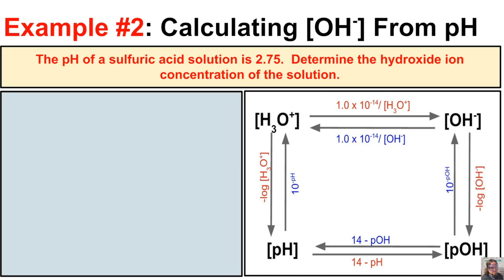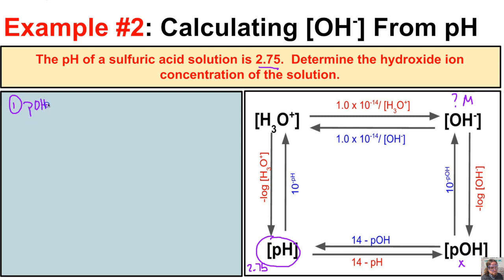In this second example, the pH of a sulfuric acid solution is 2.75, and we need to determine the hydroxide ion concentration. We know the pH is 2.75, and we want to find the hydroxide ion concentration. So in the first step, we figure out the pOH by taking 14 minus the pH: 14 − 2.75 = 11.25.